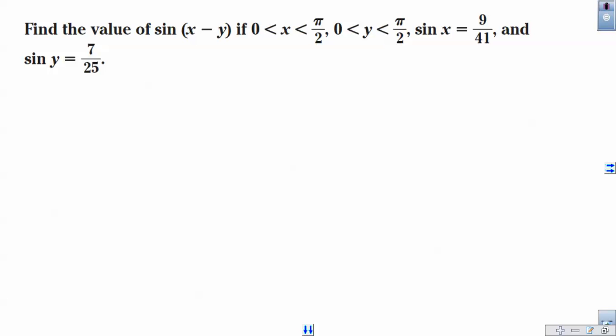Okay, more work with section 7.3. Let's take a look at this kind of problem. It says find the value of sine of x minus y, if x is an angle between 0 and pi over 2, and y is an angle between 0 and pi over 2. Sine of x is 9 over 41, sine of y is 7 over 25.